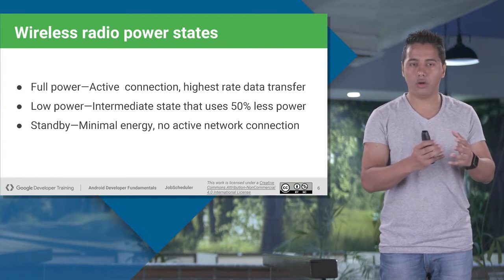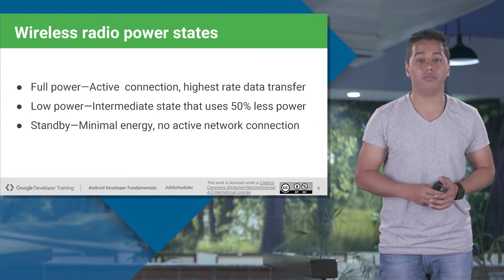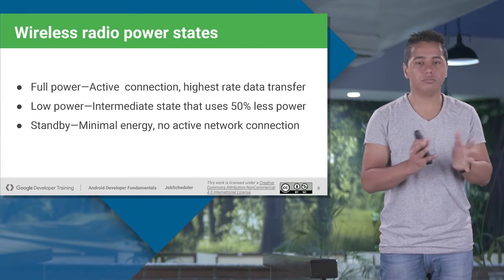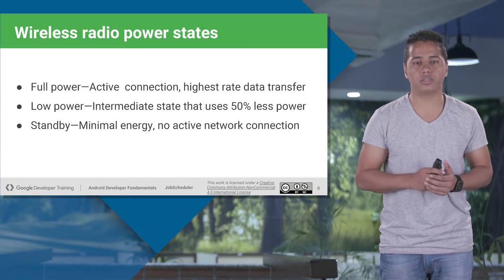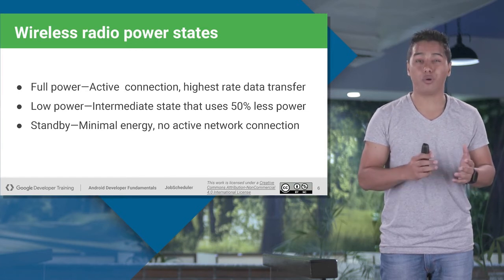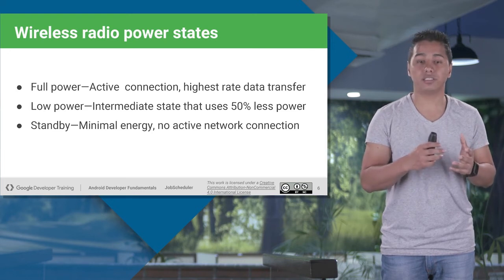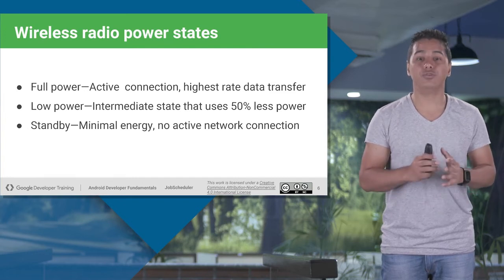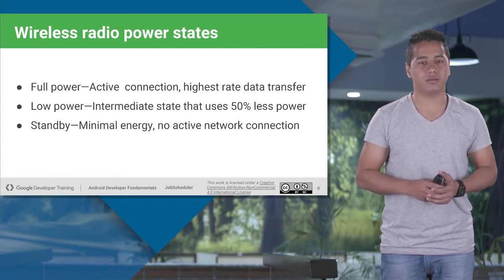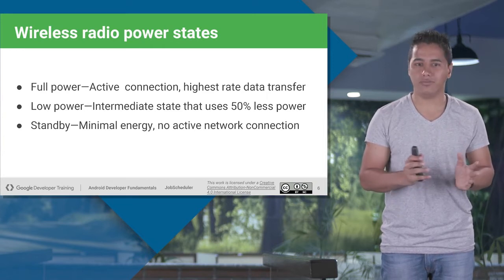Your wireless radio power states are: full power, low power, or standby. When it is full power, the network connection is active and the highest rate of data transfer is going on — it uses the battery at 100%. Low power is an intermediate state and uses 50% less power compared to full power. Standby uses minimal energy and there is no active network at that point.